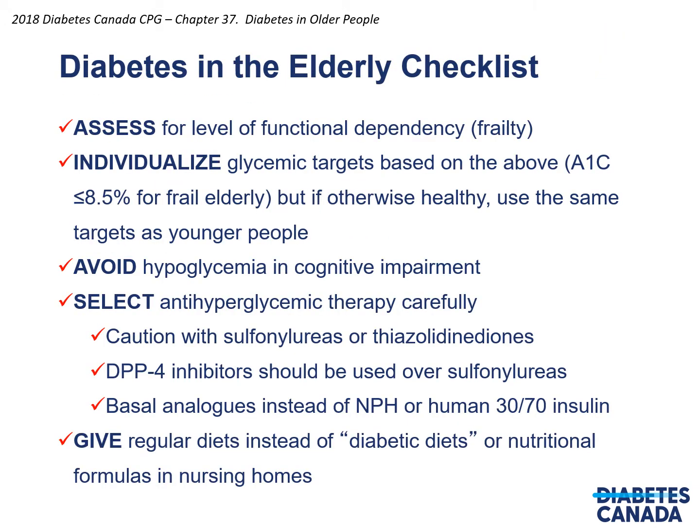This is the diabetes and the elderly checklist. First, assess for level of functional dependency or frailty — we'll talk more about that later. Second, individualize glycemic targets based on the above: A1c less than 8.5% for frail elderly, but if otherwise healthy, use the same targets as younger people.